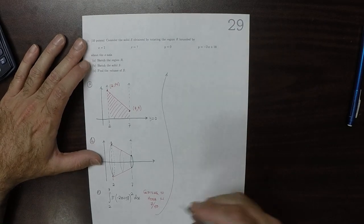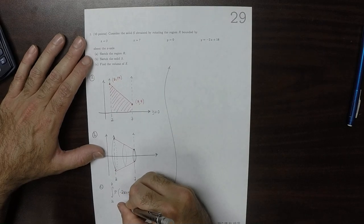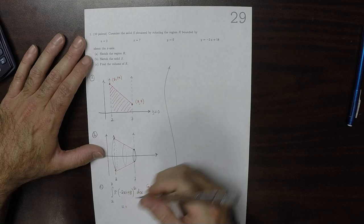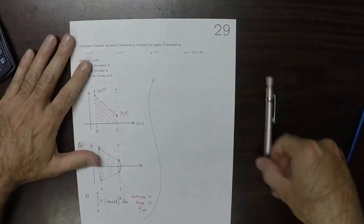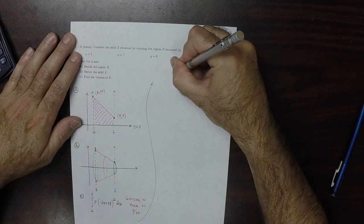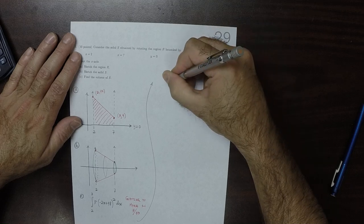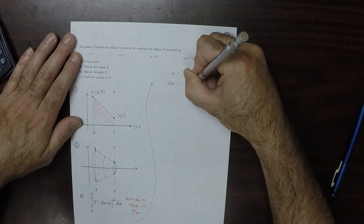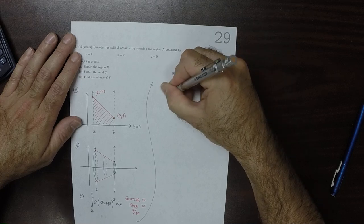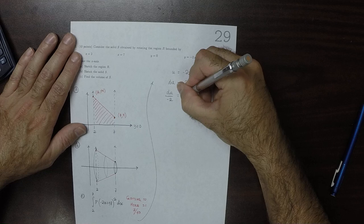So to evaluate that integral, I'll do a substitution. So u is negative 2x plus 18. So du is negative 2 dx. So du over negative 2 is dx.